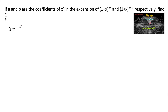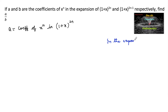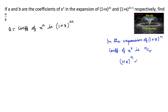So here a is given as the coefficient of x power n in the expansion of 1 plus x whole power 2n. We know that in the expansion of 1 plus x whole power n, the coefficient of x power r is nCr, since 1 plus x whole power n is nothing but summation over r equals 0 to n of nCr into x to the power r. So we can say the coefficient of x power r is nCr.